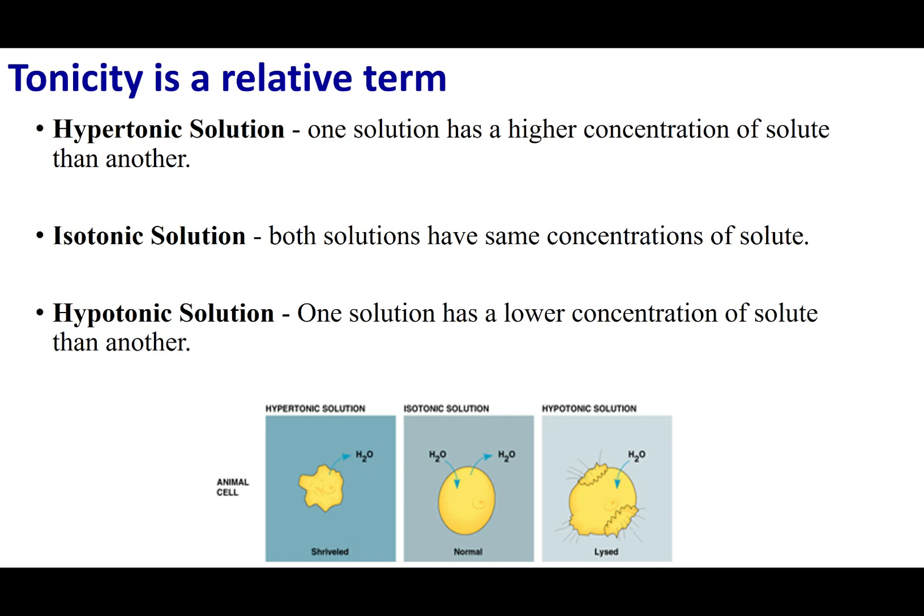So in this example, I'm going to have an animal cell. That's going to be these yellow guys right here. Now animal cells, like most cells, have a semi-permeable membrane. The cell wall allows water to come in and out. And so let's see what happens when I bathe my cell in different types of solutions.